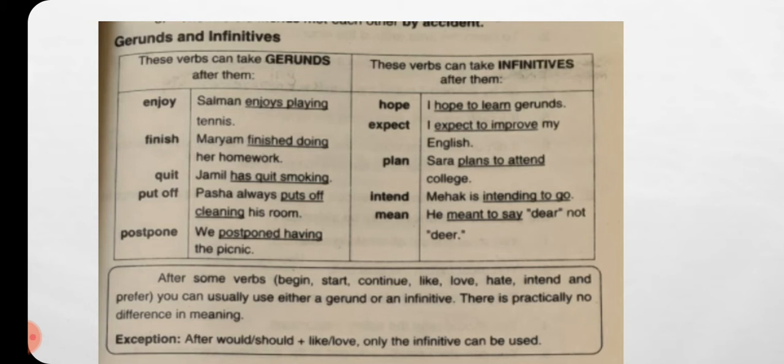Some verbs take gerund after them and some verbs take infinitive. For example, 'enjoy' takes gerund: 'Salman enjoys playing tennis.' Other verbs that use gerund are: finish, quit, put off, and postpone. Then verbs like hope, expect, plan, intend, and mean all use infinitive — that is, 'to' plus the first form of the verb.